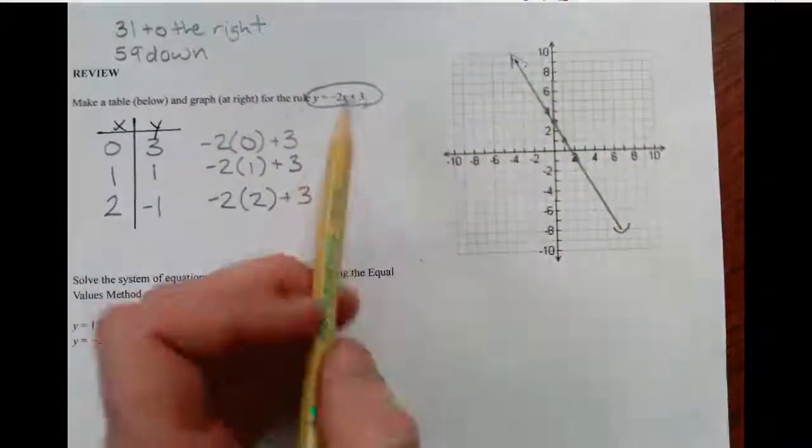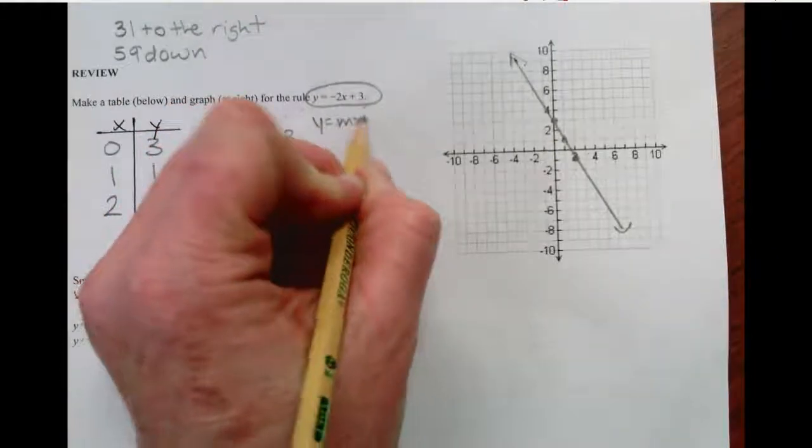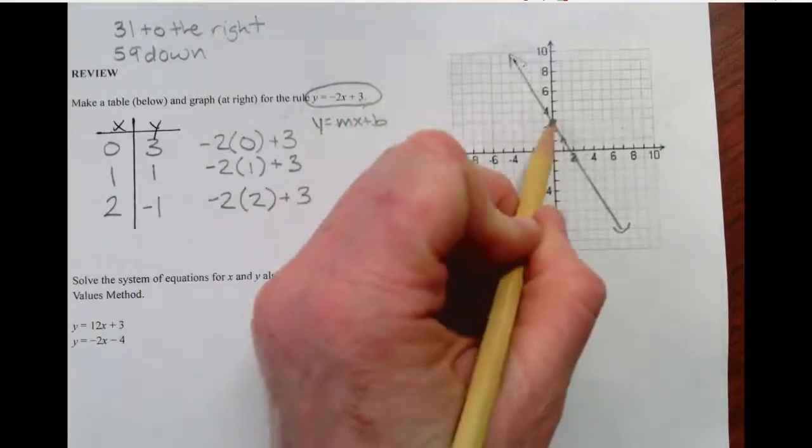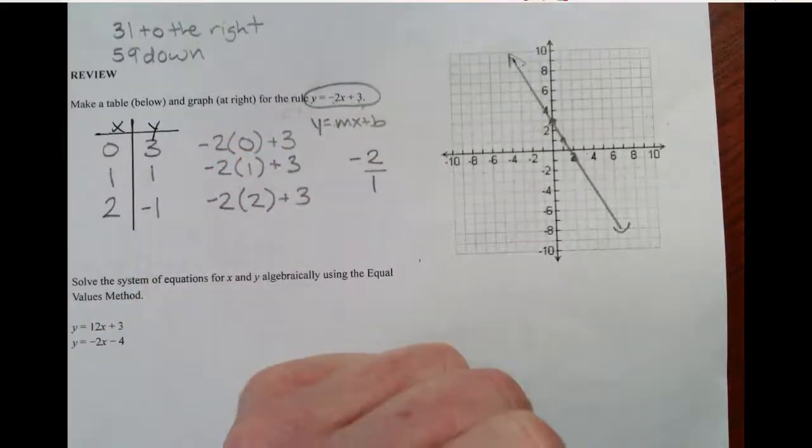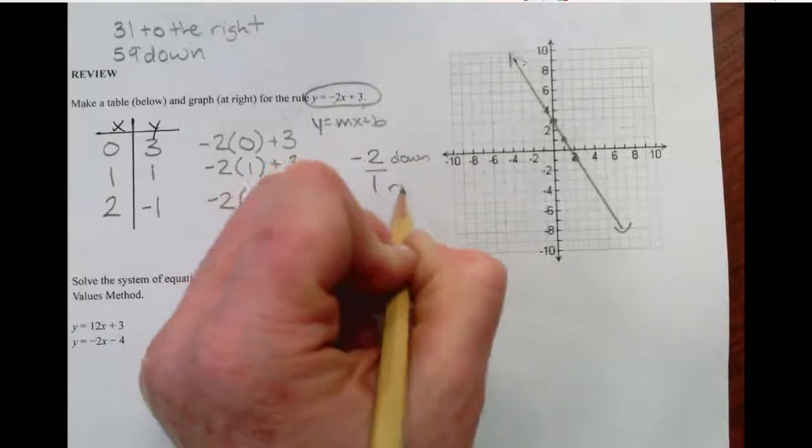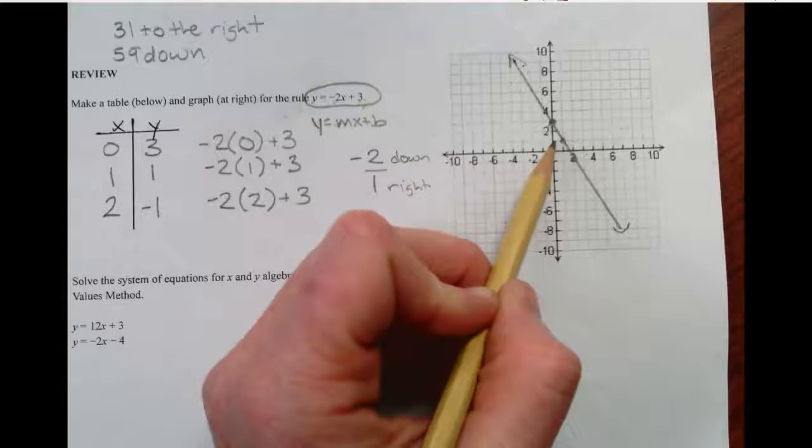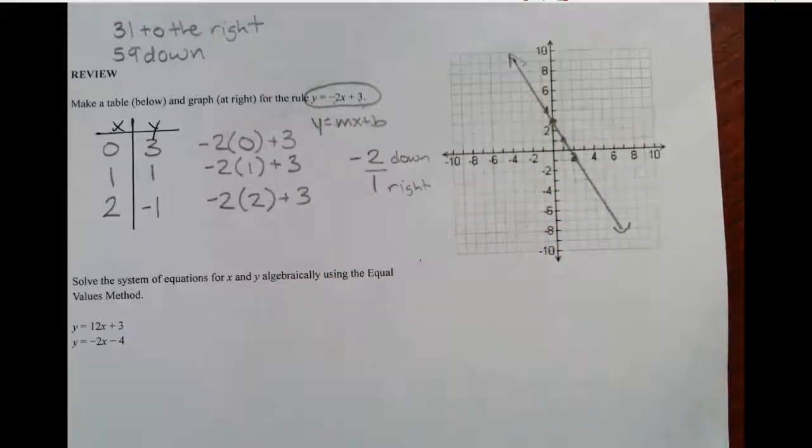We also could have used our y equals mx plus b information. b, we're going to begin at 3 on the y-axis. And this slope is negative 2. So this tells me down 2, right 1. Every time I go down 2 to the right 1, down 2 to the right 1. So it looks like I am correct with my graph.